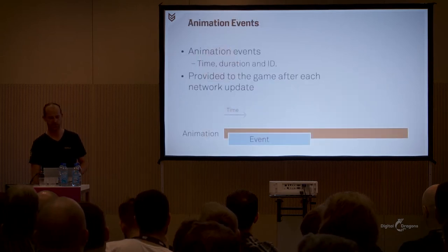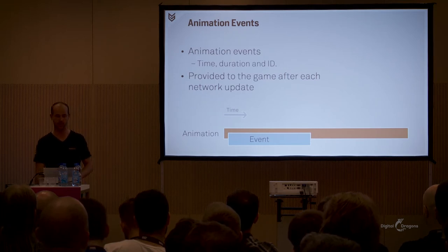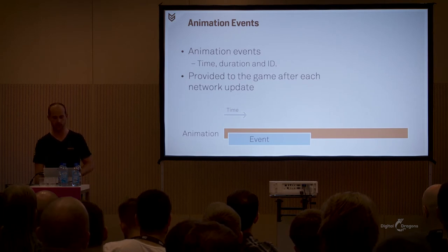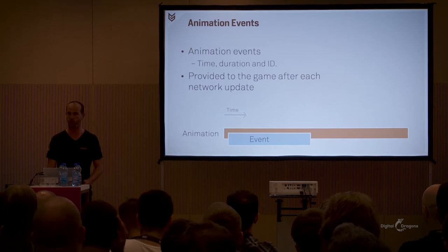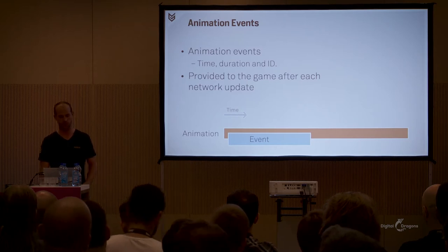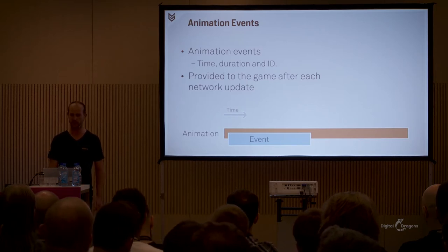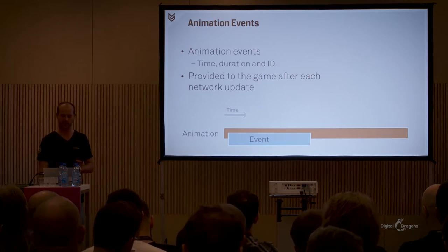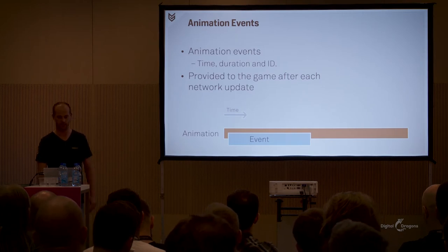Within Morpheme, each animation clip can be annotated with events, which have a time, a duration, and an ID. The animators can control when and for how long events are active and how events are blended together with multiple animations. Morpheme runtime will provide a list of currently active events to the game after each update. This is an important tool for the game logic to synchronize its own state with the animation network.